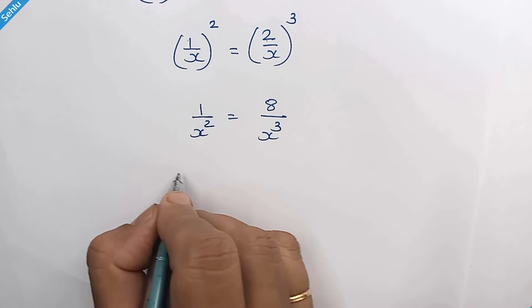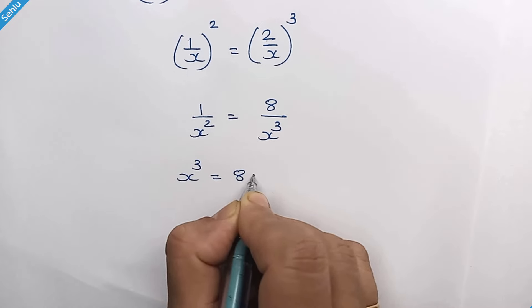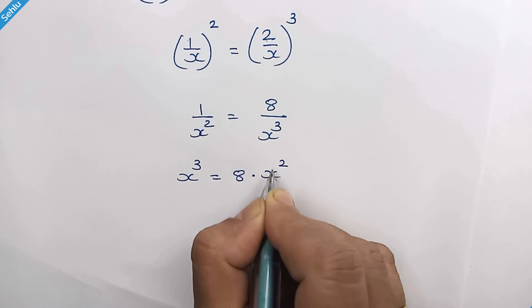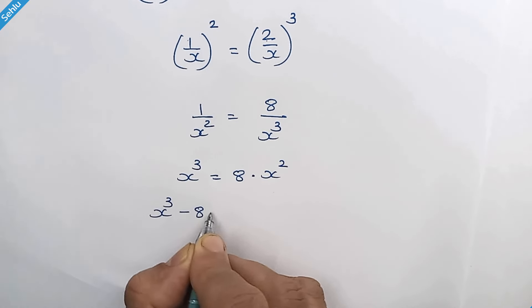Let's cross multiply them. So it will be x cube is equal to 8 times x square. Move this part to left hand side. Taking x square common.